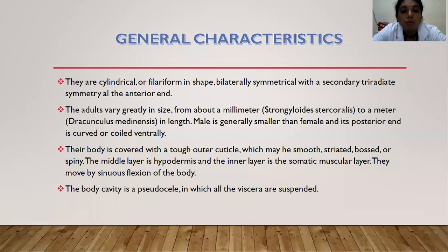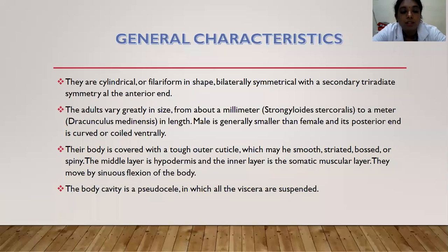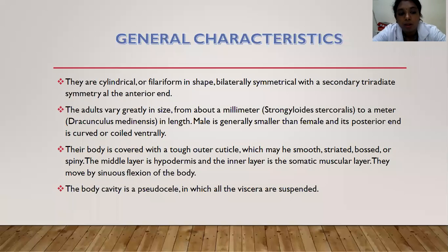The male is generally smaller than the female and its posterior end is curved or coiled ventrally. Their body is covered with a tough outer cuticle which may be smooth, striated, bossed, or spiny — four types. The middle layer is hypodermis and the inner layer is a somatic muscular layer. They move by sinuous flexion of the body.